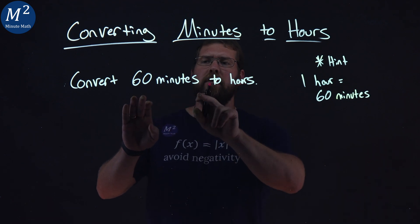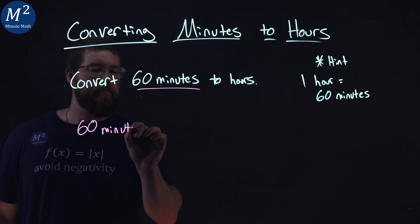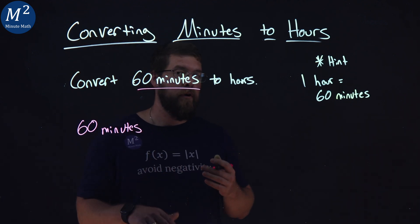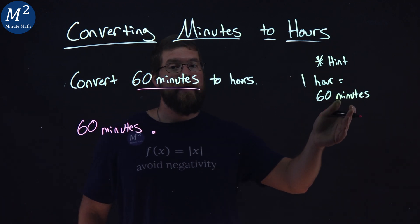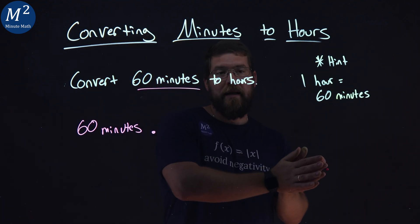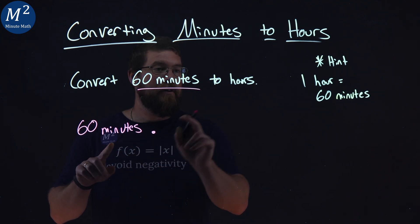Let's write down 60 minutes. To convert that to hours, I'm going to multiply by our conversion factor, which relates hours to minutes. I want to eliminate the minutes to get to hours.